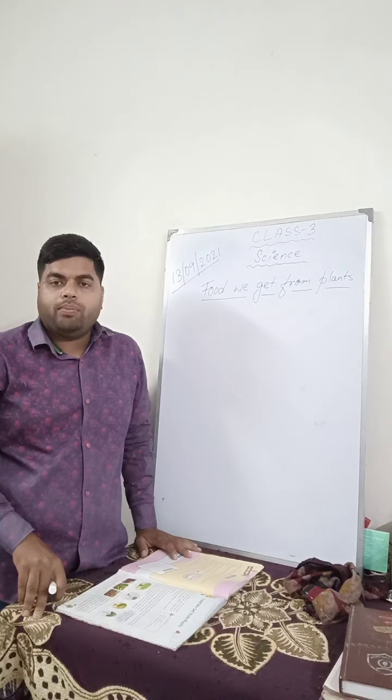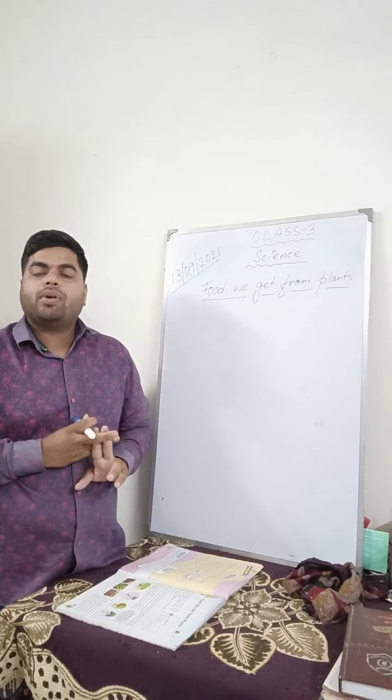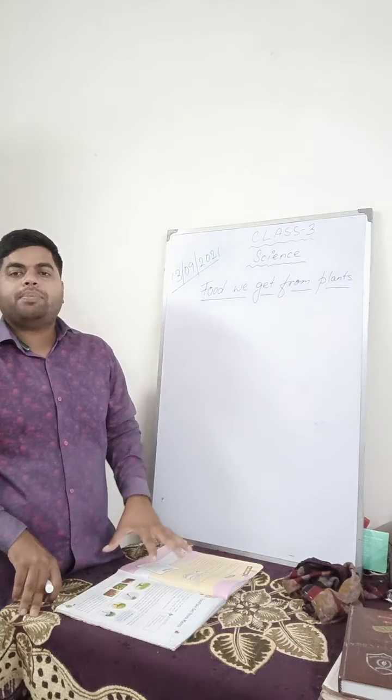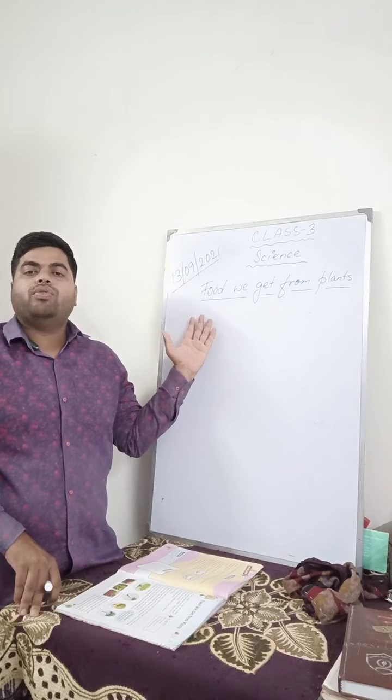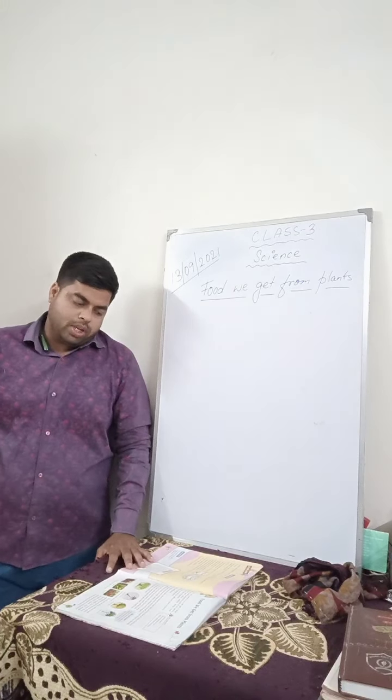Now today we will study about what are the different types of food that we get from plants. We have already studied about the timber we get from plants, the medicine we get from plants, how plants are useful to us. So today in this chapter we will specially study about the different types of food that we get from plants.